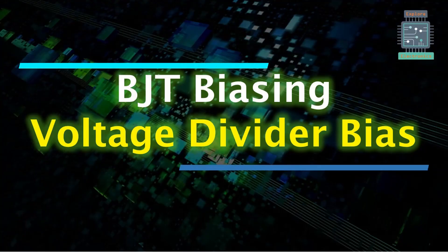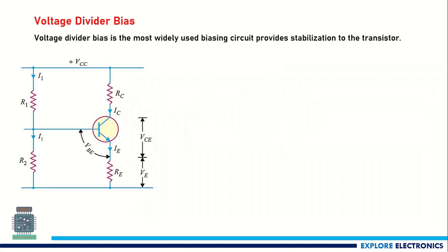Hello everyone. In this video, let us see the next type of biasing: voltage divider bias. This voltage divider bias is the most widely used biasing circuit. This biasing technique provides more stabilization to the transistor operating as an amplifier. Here you can see the circuit of voltage divider bias.